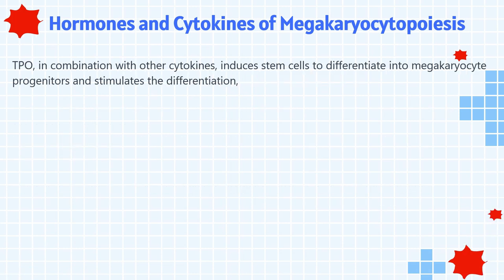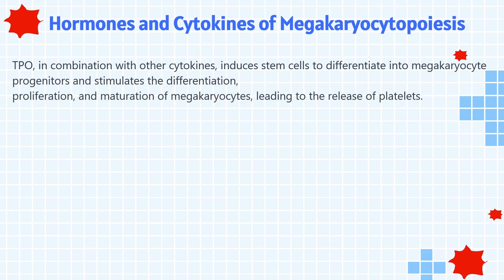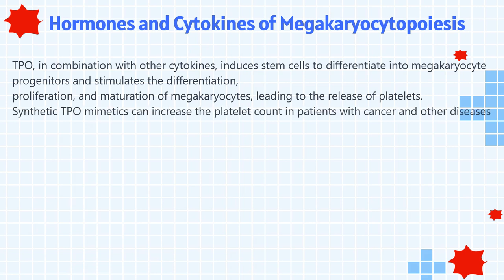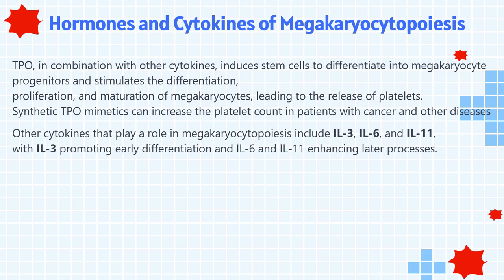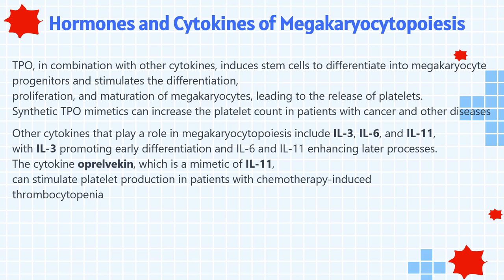Thrombopoietin, in combination with other cytokines, induces stem cells to differentiate into megakaryocyte progenitors and stimulates the differentiation, proliferation, and maturation of megakaryocytes, leading to the release of platelets. Synthetic thrombopoietin mimetics can increase the platelet count in patients with cancer and other diseases. Other cytokines that play a role in megakaryocytopoiesis include interleukin-3, interleukin-6, and interleukin-11, with interleukin-3 promoting early differentiation and interleukin-6 and interleukin-11 enhancing later processes. The cytokine oprelvekin, a mimetic of interleukin-11, can stimulate platelet production in patients with chemotherapy-induced thrombocytopenia.